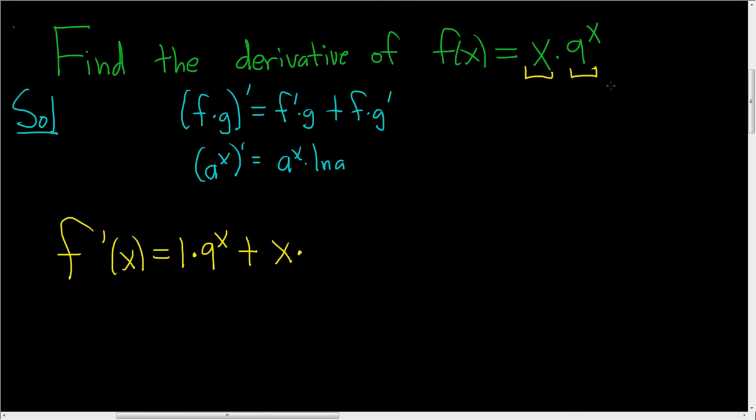times the derivative of the second piece. Well, the derivative of 9 to the x is simply 9 to the x times the natural log of 9.